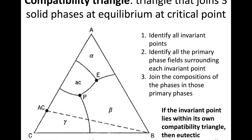Step three is to join the compositions of the phases involved in those primary phase fields. Alpha's composition is pure A, beta's composition is pure B, and AC's composition is the compound AC. We take those three compositions — A, B, and AC — and join them together to form a triangle.